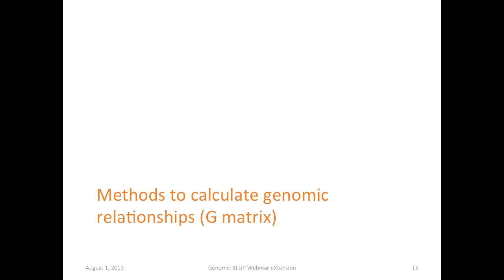So we covered different matrices derived from the markers to calculate genomic relationships. Now let's look at some of the methods suggested in the literature to calculate genomic relationships.